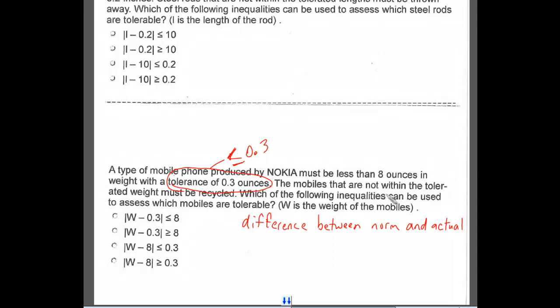The actual weight of the phone must be less than 8 ounces. The absolute value is the difference between what it weighs and the actual weight it's supposed to be, or what it should be. And that has to be less than or equal to 0.3.